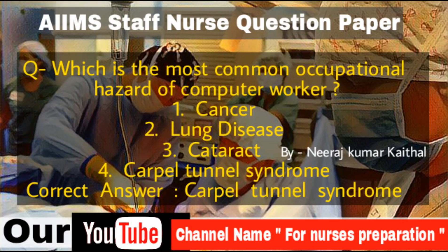Question: Which is the most common occupational hazard of computer workers? Options: Cancer, lung disease, cataract, carpal tunnel syndrome. Correct answer is carpal tunnel syndrome. Carpal tunnel syndrome is numbness, tingling, weakness and other problems in your hand due to pressure on the median nerve in your wrist.